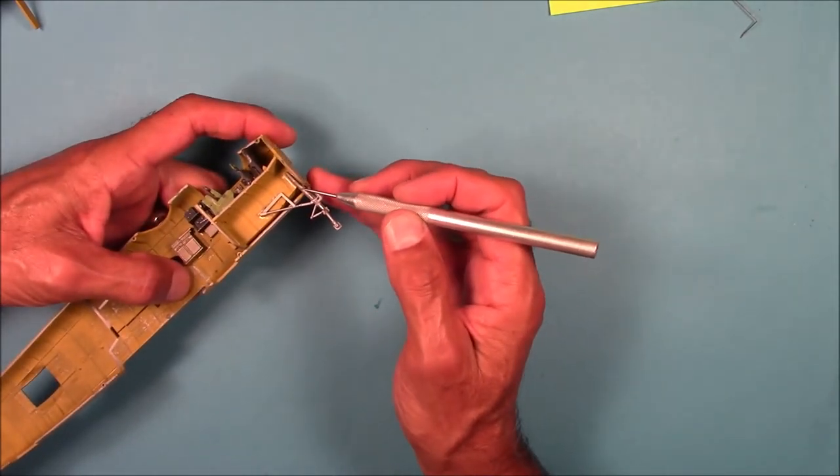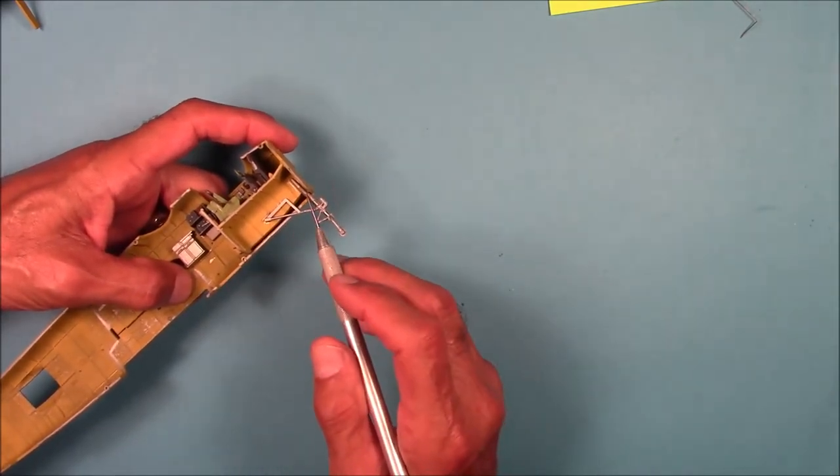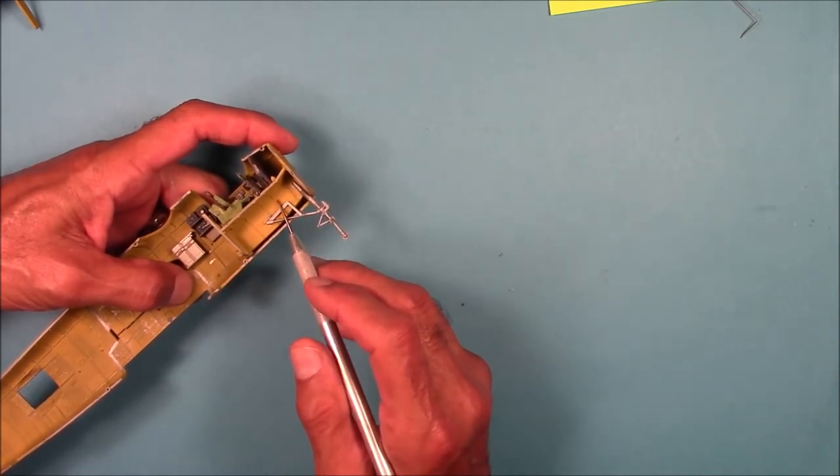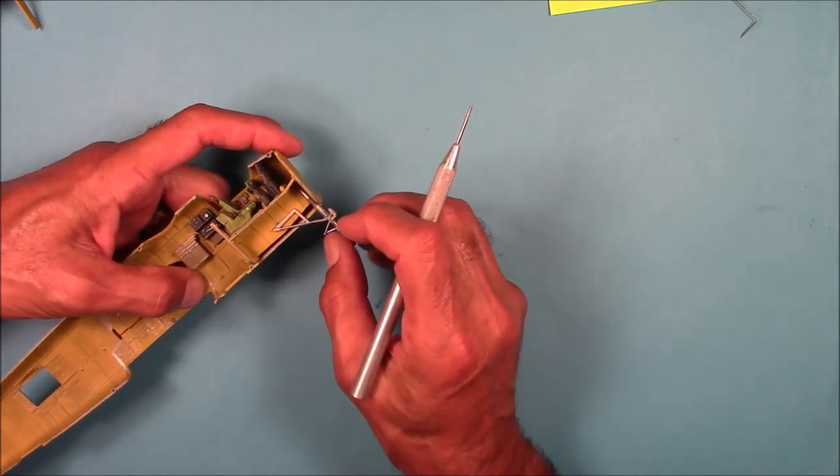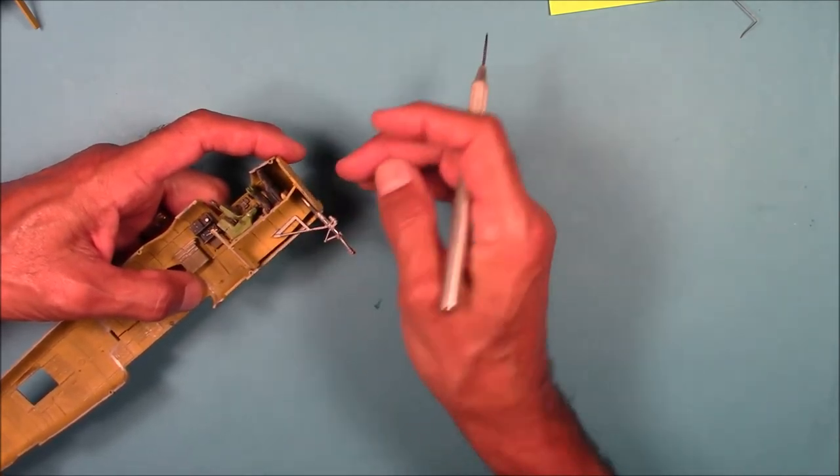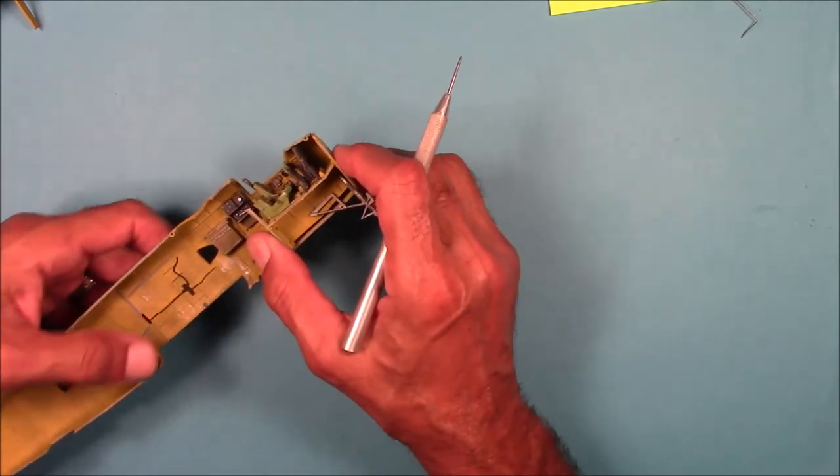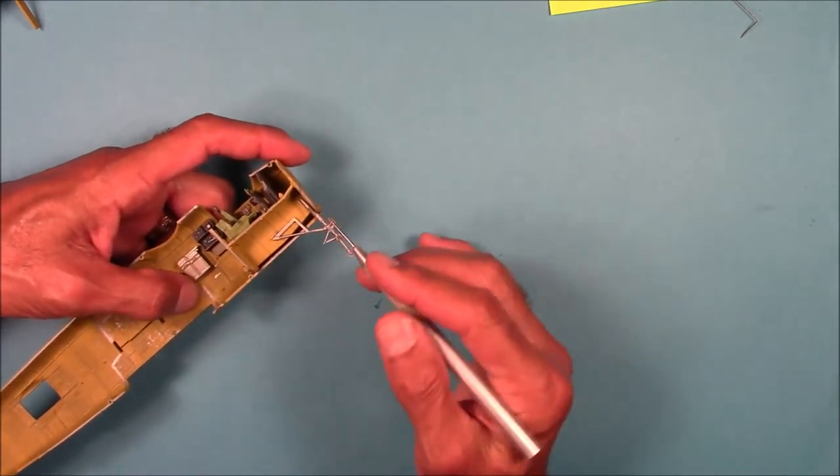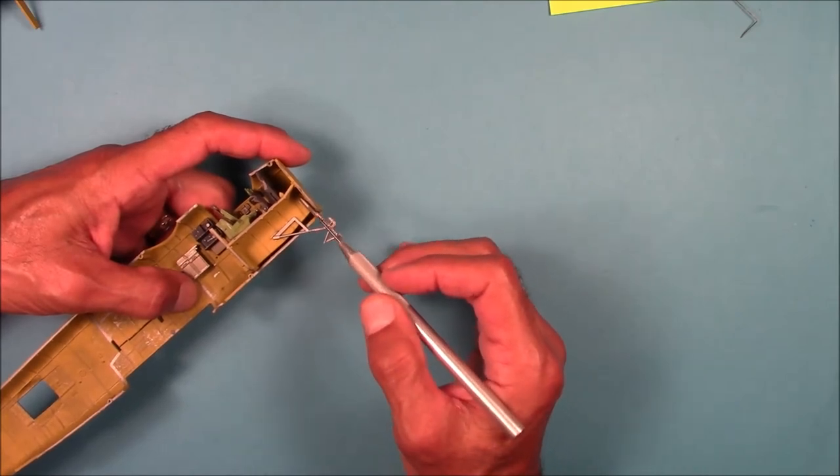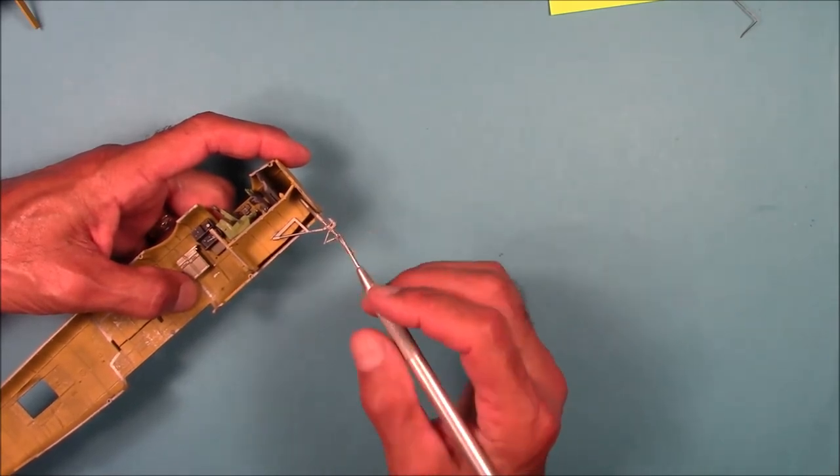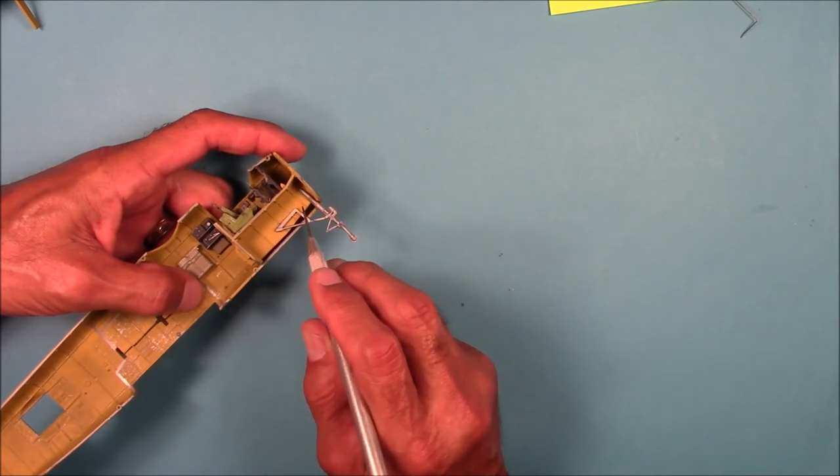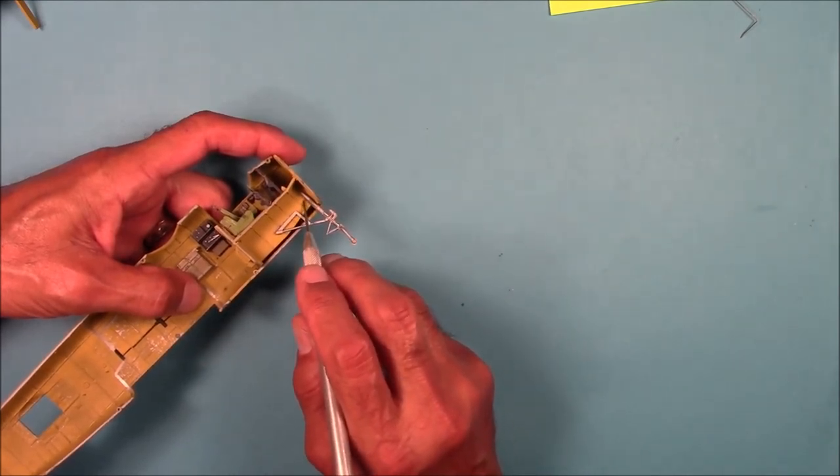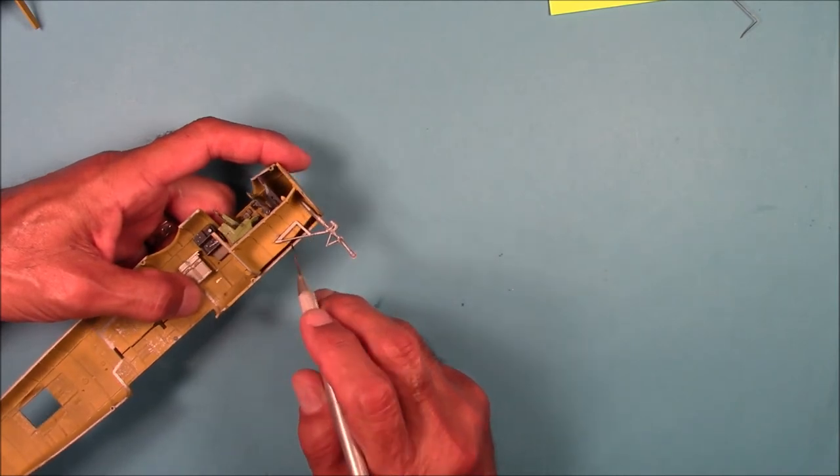It's very important that this forward landing gear have a very strong bond with this subassembly for the cockpit because all of the weight that you're going to have to add in front of this area here to get the tricycle landing gear of this aircraft to sit correctly is going to be taken up by this piece of plastic right here. So I ran a bead of super glue along here after I scraped off the paint, and the capillary action of the super glue gave me a real strong bond.